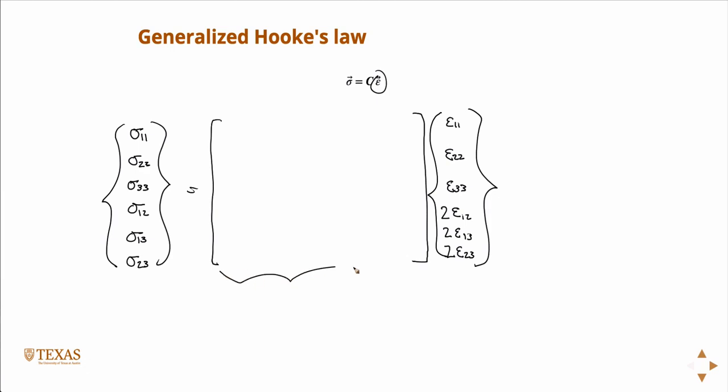And so this is C. So if C is a matrix, how many entries does it have? Thirty-six, right? Thirty-six entries.